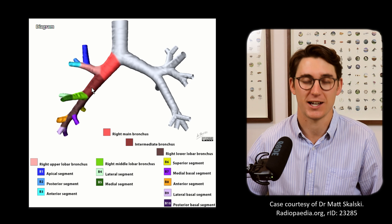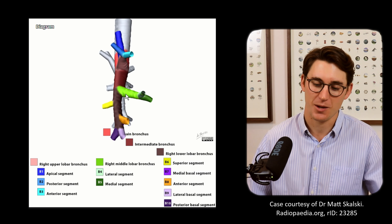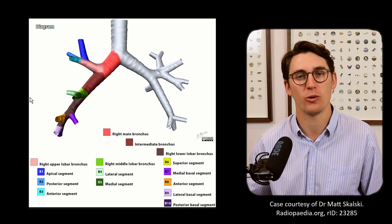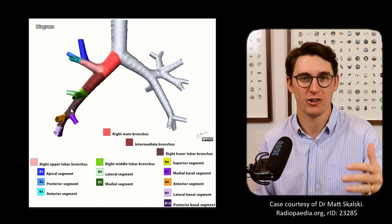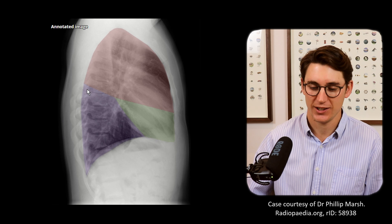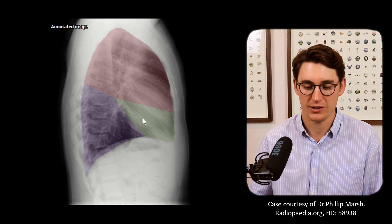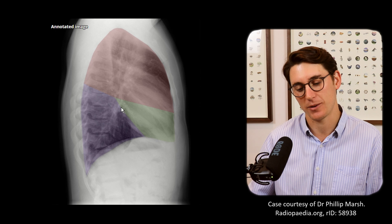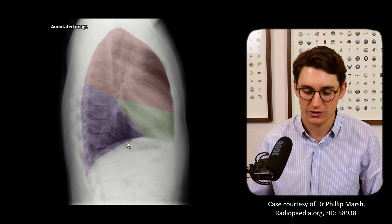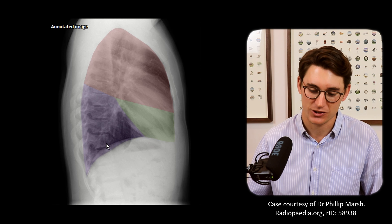Following our bronchus intermedius down, we have our right middle lobe bronchus coming anteriorly. It's helpful to think of the upper lobe as superior, and the middle and lower lobes as inferior — the middle lobe being essentially an anterior lobe and the lower lobe a posterior lobe. On a lateral chest X-ray you can see why the middle lobe bronchus branches forward while the lower lobe bronchus heads posteriorly, and why the posterior lung extends much further inferiorly than the anterior portion.